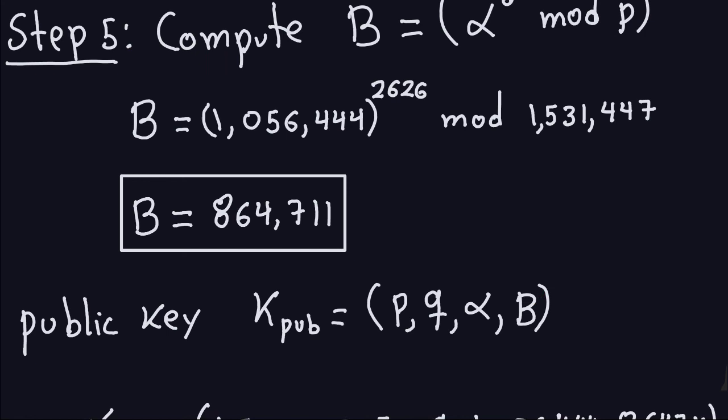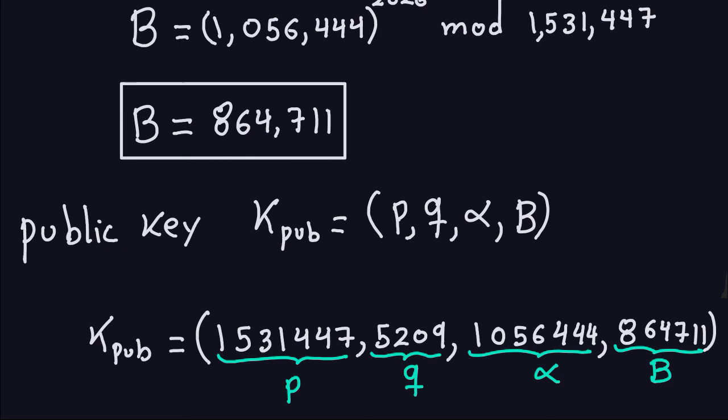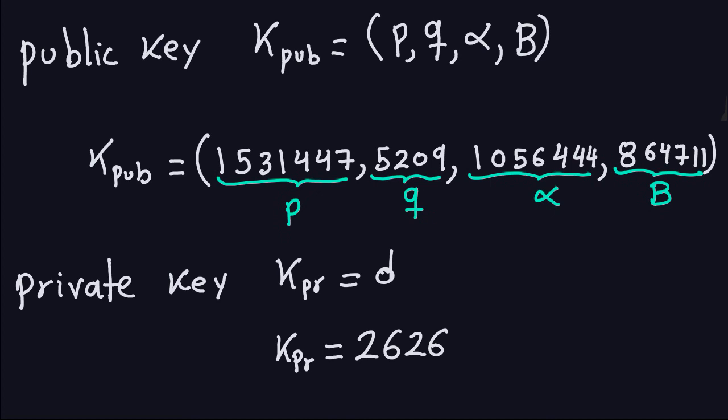The public key is the four numbers: P, Q, alpha, and B (= alpha^D mod P). The private key is D = 2626. This completes the DSA key generation example. In the next video, I'll show a realistic example where P is actually 1024 bits and Q is actually 160 bits, meeting the full specification.